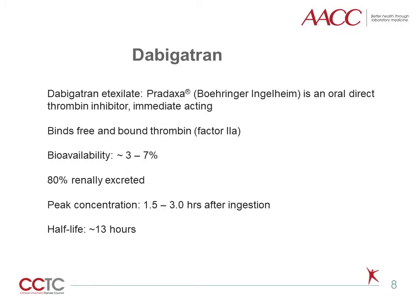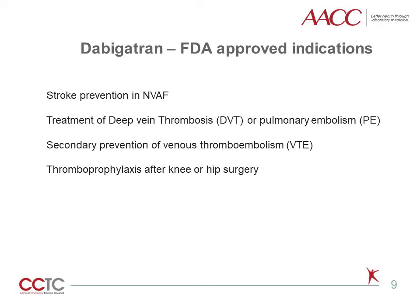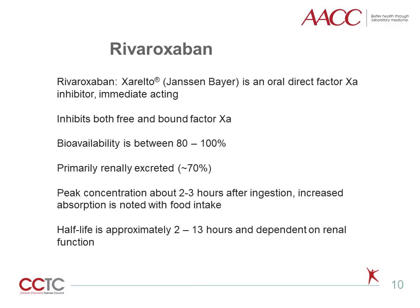Dabigatran, which is administered as dabigatran etexilate, brand name Pradaxa, is an oral direct thrombin inhibitor, which is immediate acting with peak concentration one and a half to three hours after administration. It inhibits free and bound thrombin, also known as activated factor 2. Dabigatran is primarily excreted by the kidneys and has a half-life of about 13 hours. The current FDA-approved indications for dabigatran are stroke prevention in non-valvular atrial fibrillation, treatment of DVT and PE, the secondary prevention of VTE, and thromboprophylaxis after knee or hip surgery.